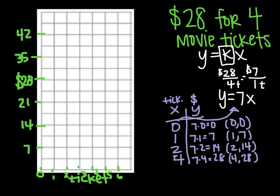And then, now I'm going to plot them. So (0, 0) was my first, which is right here. Then (1, 7), (2, 14), (4, 28).